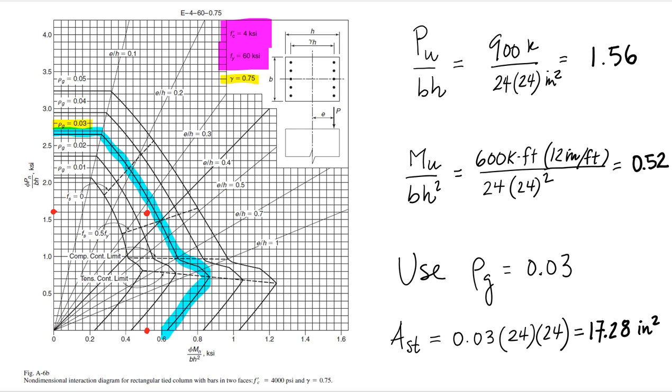As you can see here, the diagram works with two different values. One for the normalized bending stress and one for the normalized axial stress. So if we take PU divided by BH, we obtain 1.56 and that's the number that is shown here in the vertical axis with the red dot approximately.